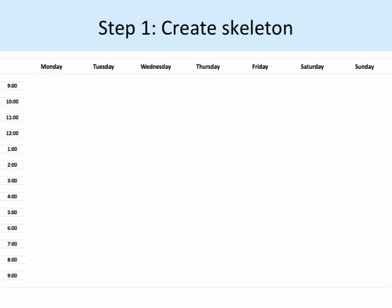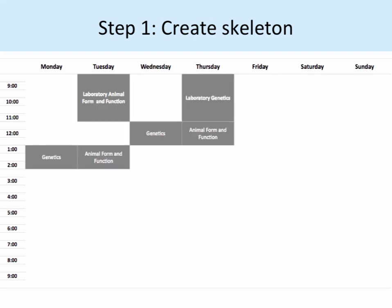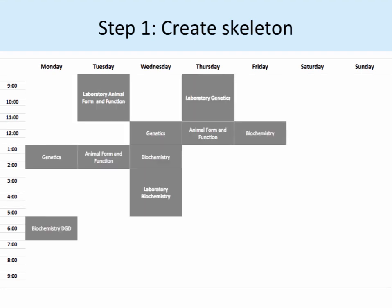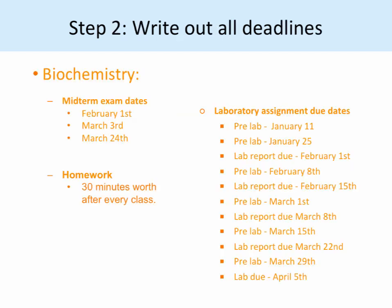Step 1 is to create the skeleton for your semester. This will include all your classes, DGDs, and labs for the semester. In this example, the calendar has been made using Excel, however there are many different programs you could use to do this. For the sake of this video, I will be using the schedule here as an example. And now we have the skeleton for what the semester will look like from week to week.